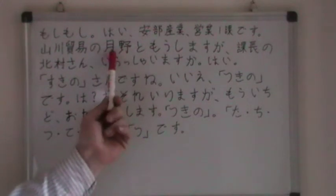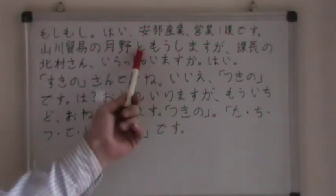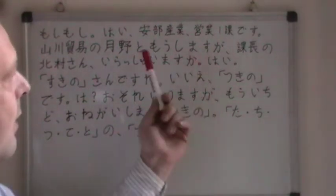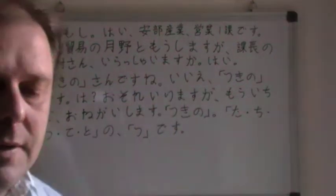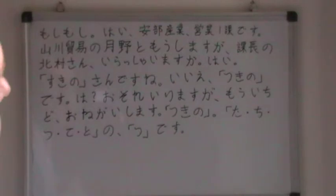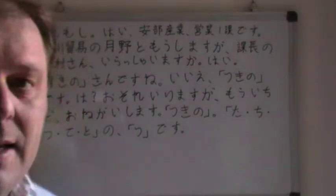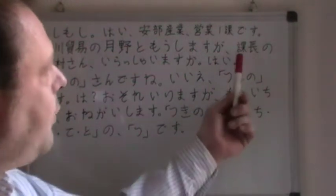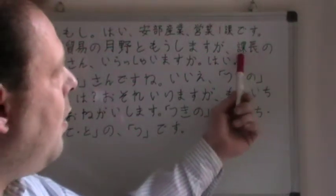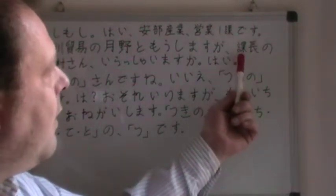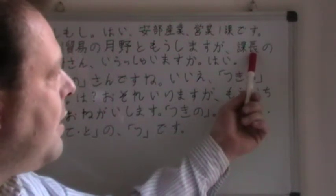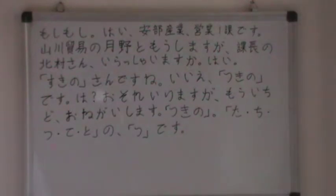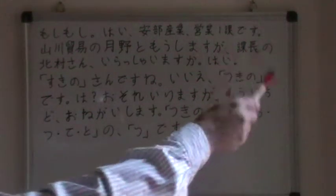Tsukino — the name, the Japanese surname. To — quotation mark. Moushimasu — that's from mousu, a humble way of saying iru, to say or to be called. Ga — but. Kachou — and we have Ka here again, meaning section; chou meaning manager. No. I am not going to explain this no here, just take it as it is. Kachou no — Kitamura, another surname.